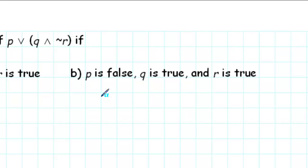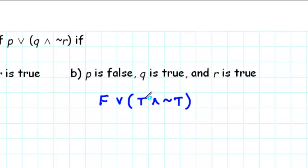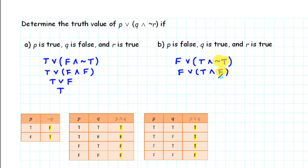This time we substitute false for P, true for Q, and true for R. Just like before, we start inside the parentheses with our negation. Not true is false. The next thing we have inside our parentheses is a conjunction. We have true and false, and looking that up in our table, true and false is false.